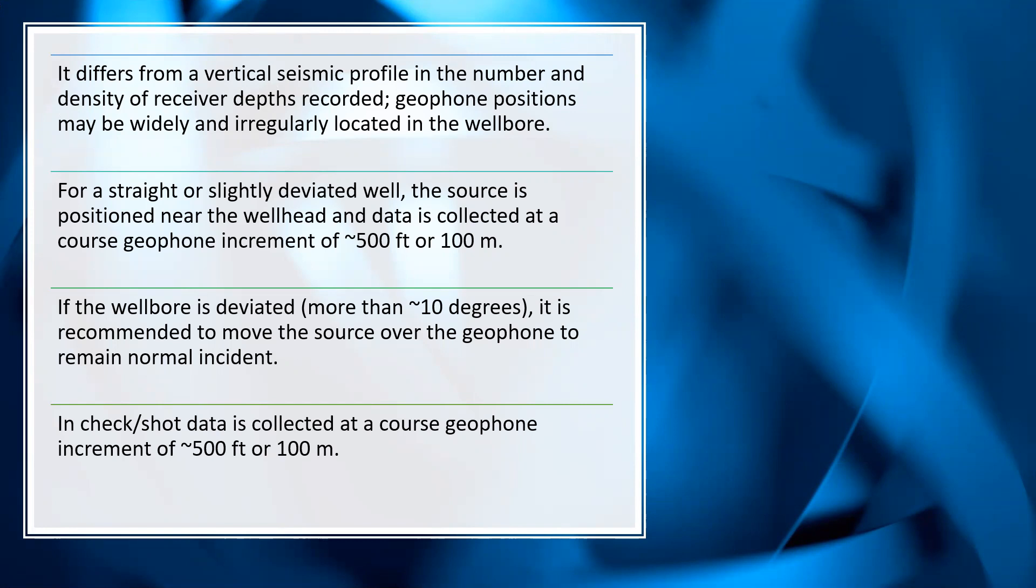Second, for a straight or slightly deviated well, the source is positioned near the wellhead and data is collected at coarser geophone increment of around 500 feet or 100 meters. Third, if the well is deviated more than 10 degrees, it is recommended to move the source over the geophone to remain normal incident.